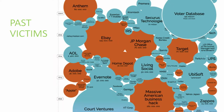Here's a visualization where the size of the bubble represents the size of the breach that occurred. What's missing from this chart is the Equifax hack, which should be there — it would just cover the entire page.